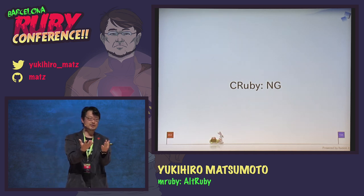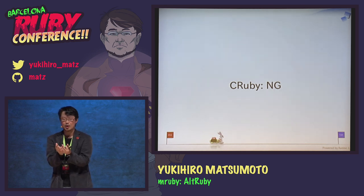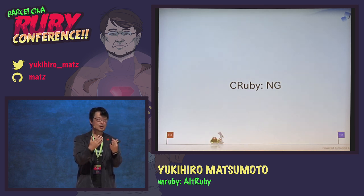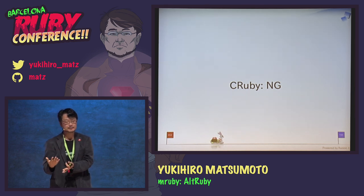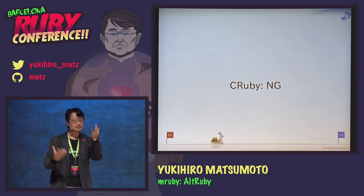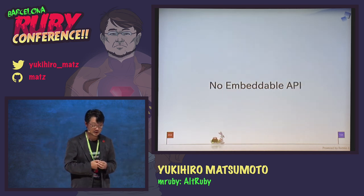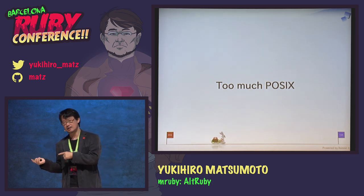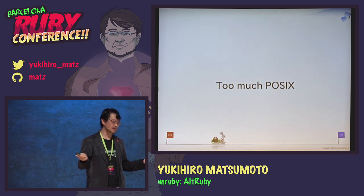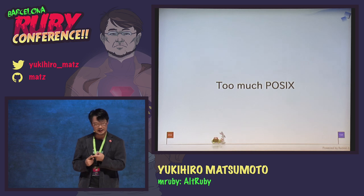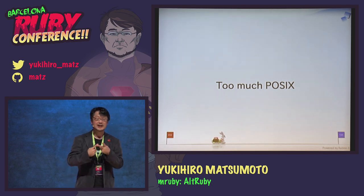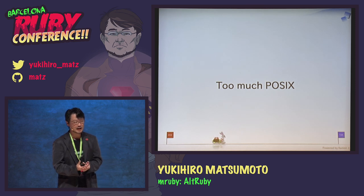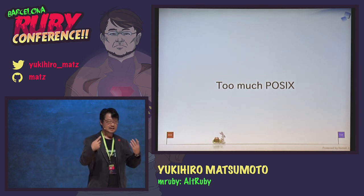People in the embedded field want to implement their systems in C or C++, then enhance them with a more flexible language like Ruby. So the architecture is upside down — CRuby is not suitable for that purpose: no embedding API and too much POSIX dependency. Most embedded platforms are not POSIX-aware. JRuby is not good either — the JVM has no embedding API, it's huge, and it's too much Java.